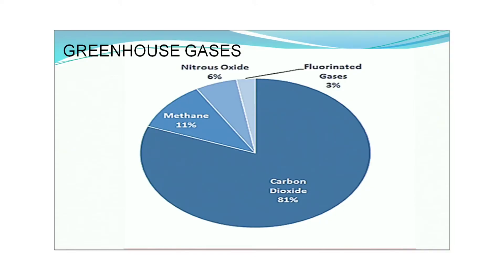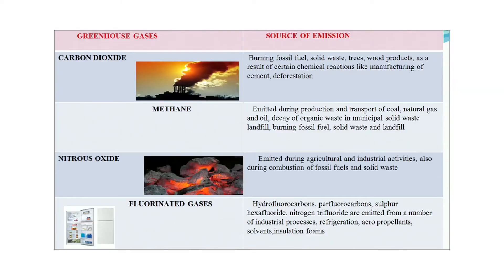Very recently, incessant rain in southern and eastern parts of our country has been resulting in disruption of life. Looking at the greenhouse gases in our atmosphere: the major part is carbon dioxide at about 81 percent, followed by methane at about 11 percent, then nitrous oxide at 6 percent, and fluorinated gases at about 3 percent.